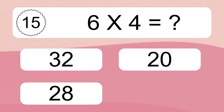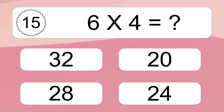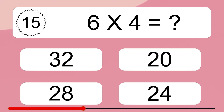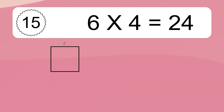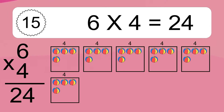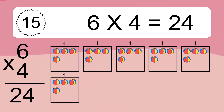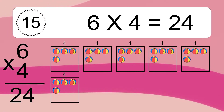6 times 4 equals what? 6 times 4 equals 24. We have 6 boxes and each box has 4 colorful balls inside. If you count all the balls in all the boxes together, you will have 6 times 4 balls. This equals 24 balls.